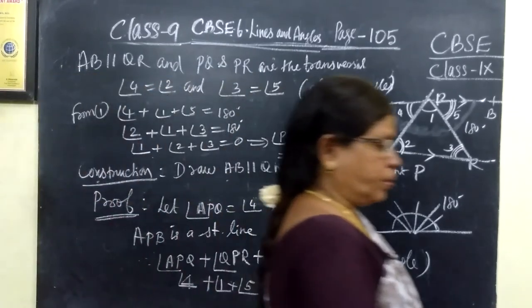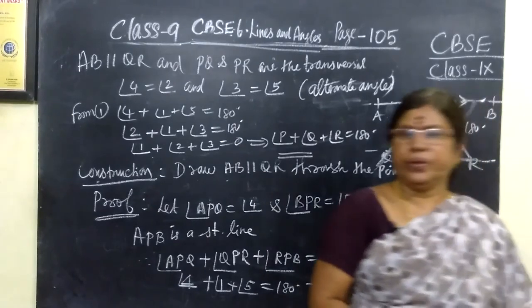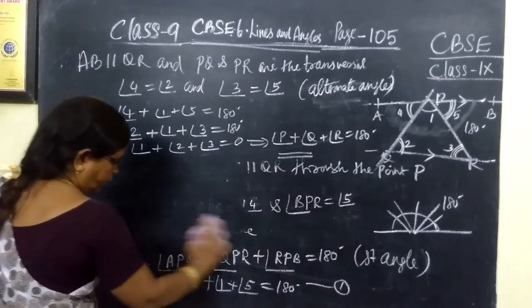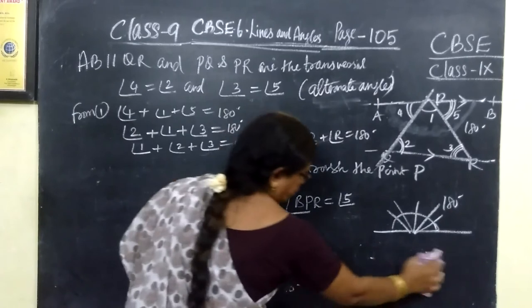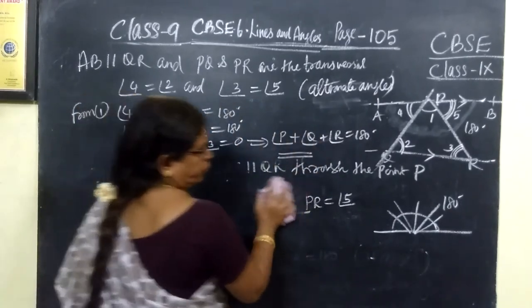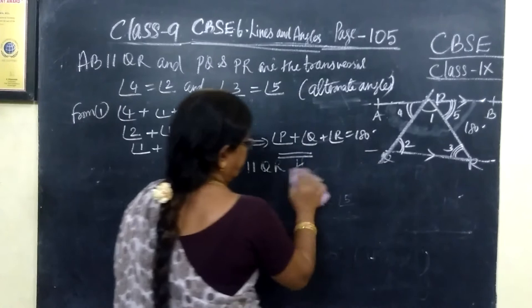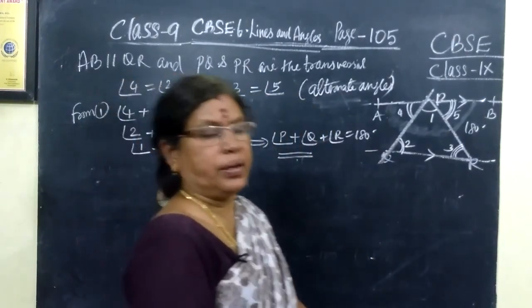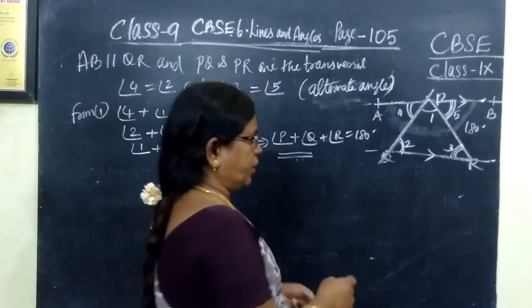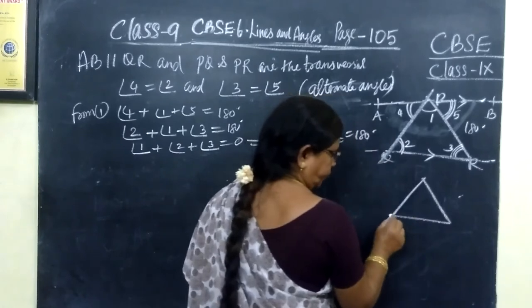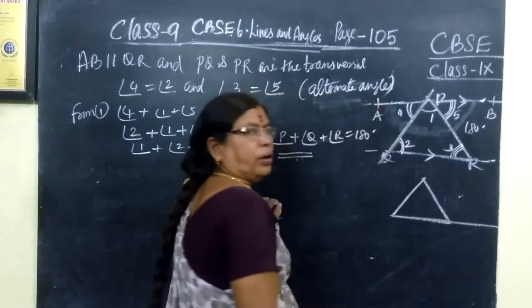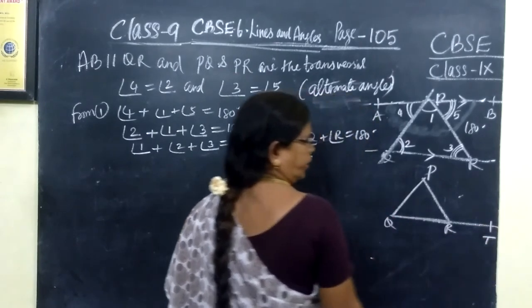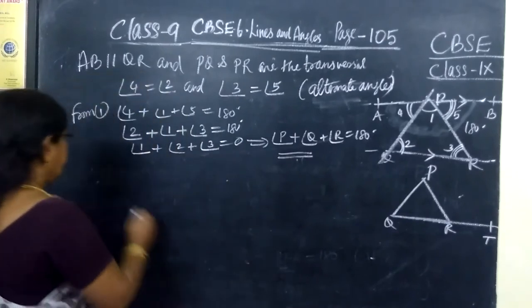This is a very simple theorem. This theorem is extended to get a new result when a side of a triangle is produced. We know the exterior angle is equal to the sum of the interior opposite angles. Taking the same triangle PQR, we produce the side to T, and we get another result.